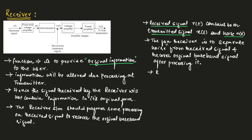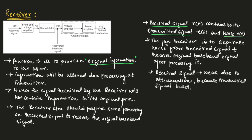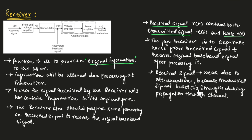The received signal will be weak due to attenuation, because the transmitted signal loses its strength during propagation through the channel. That is why the received signal will be weak. Hence, the received signal as seen in the block diagram will be voltage amplified.